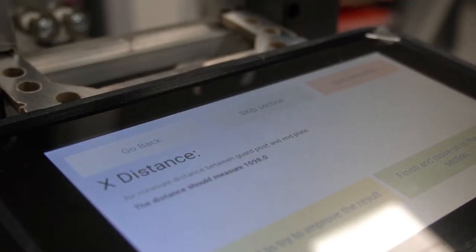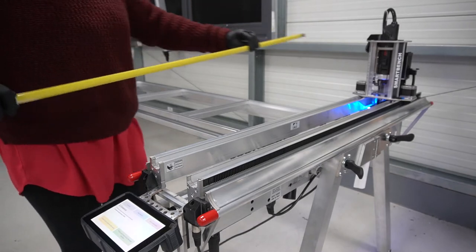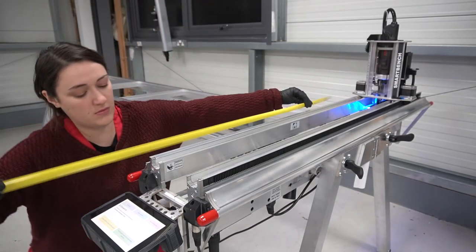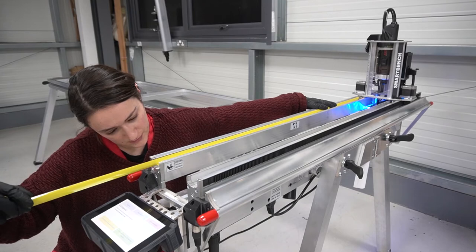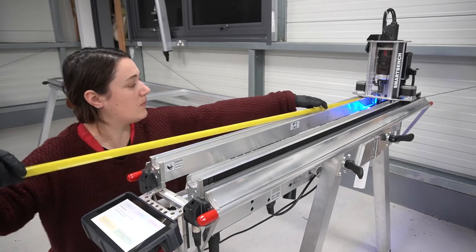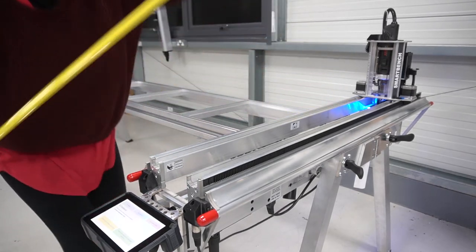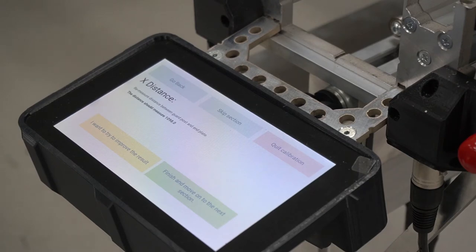The screen will then indicate an expected measurement depending on your starting position. Re-measure the distance between the guard post and the end plate to confirm, using your free hand to support the middle of your tape measure to stop flex. If the measurement is accurate, you can finish and move on to the next section.